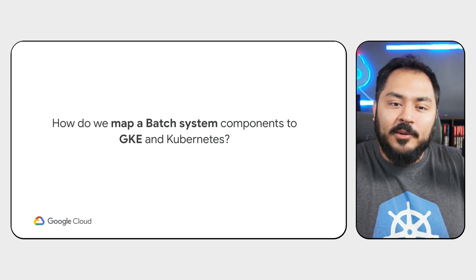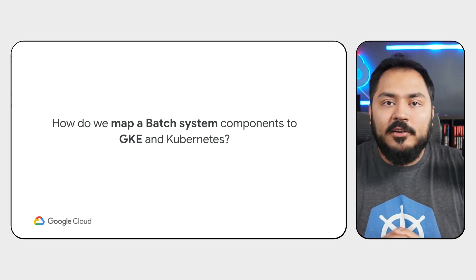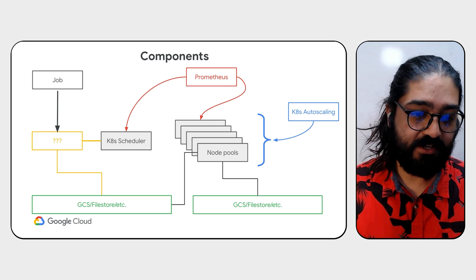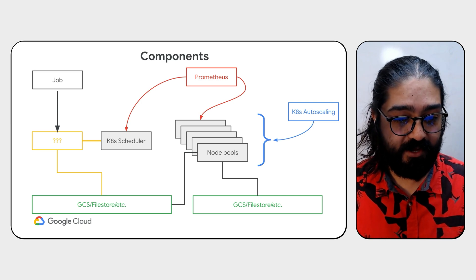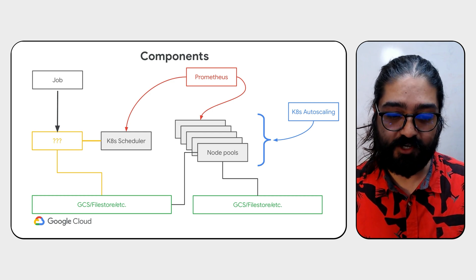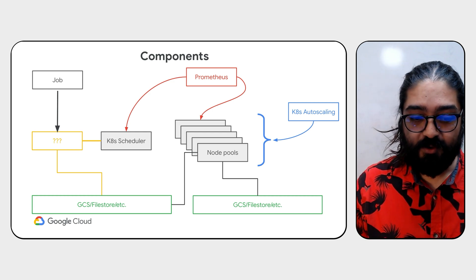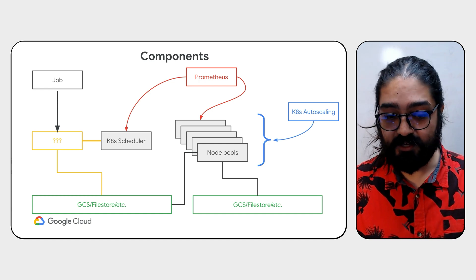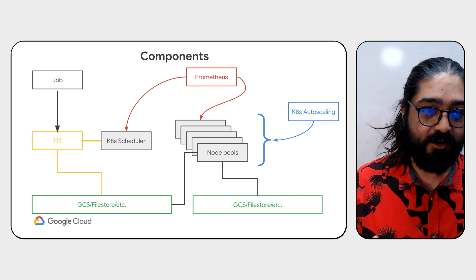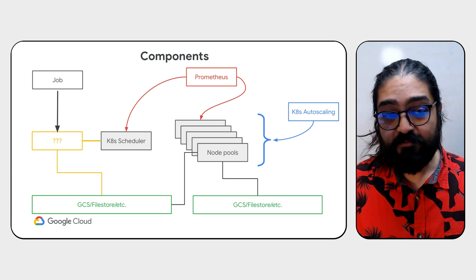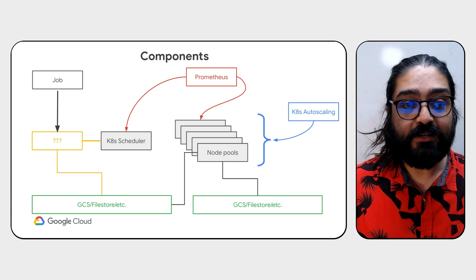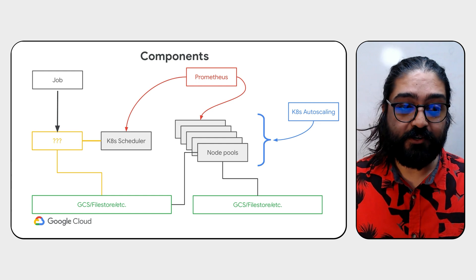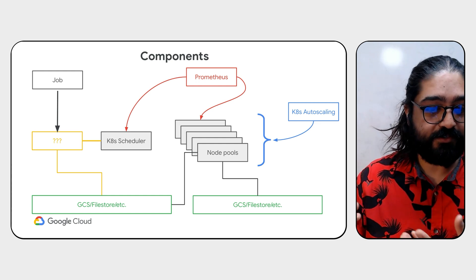But how do we map batch system components to GKE and Kubernetes? We already have the rest of the components in the Kubernetes ecosystem to represent the pieces of a batch platform. You have the Job API that covers the creation and submission of a job. Kubernetes itself is a scheduler. You have the concept of storage classes and various options to consume storage, such as Cloud Storage, NFS as in Filestore, or any kind of block storage device. And then you have monitoring options like Prometheus and any number of open source monitoring tools, like OpenTelemetry. And then you have node tools that actually go and run the workloads with the capability to auto-scale them.